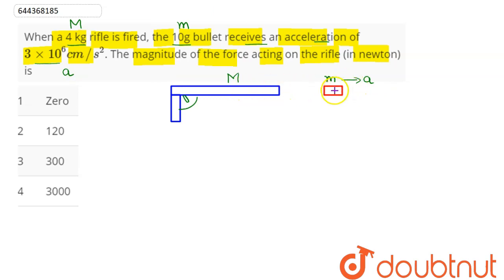We need the magnitude of force acting on the rifle. The rifle exerts a force F on the bullet, and the bullet exerts the same magnitude of force in the opposite direction, obeying Newton's third law of motion. Therefore, the force acting on the rifle can be calculated by finding the force acting on the bullet.